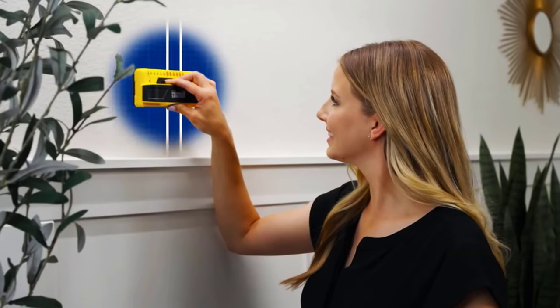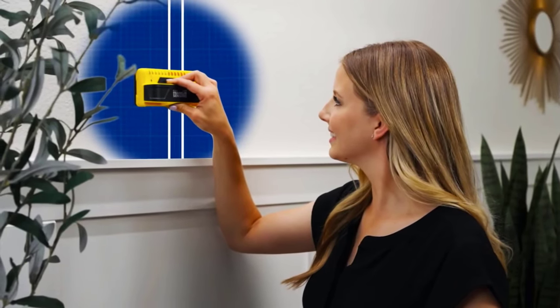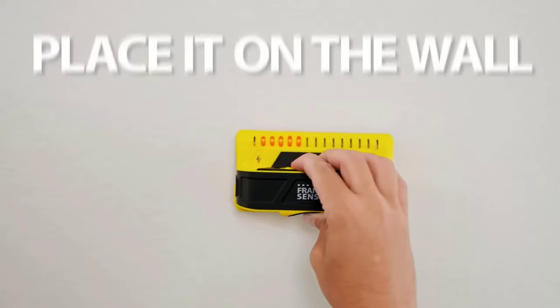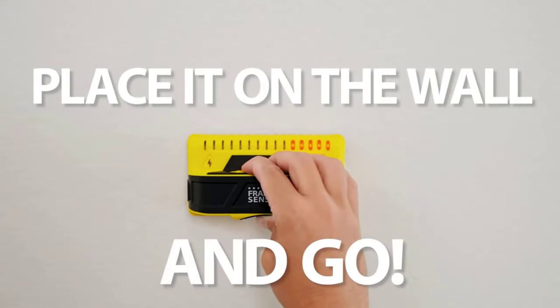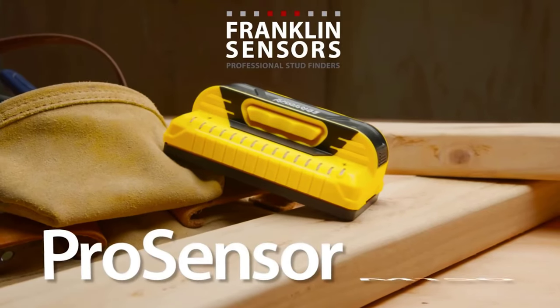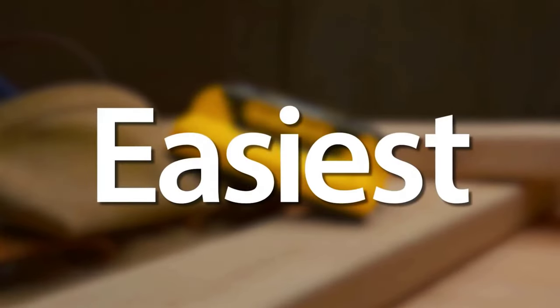For example, you can see both the edges and the center of the stud, and if the device detects a live wire, the lightning bolt warning icon will light up. So there you have it, Franklin Pro Sensor M150 review.